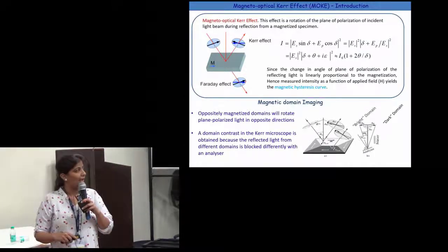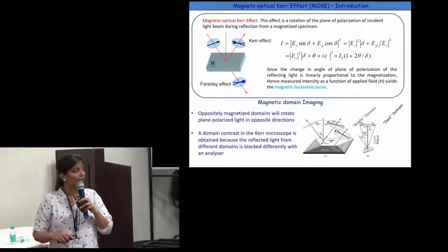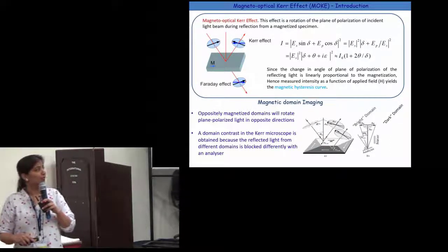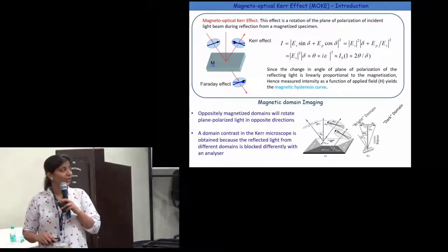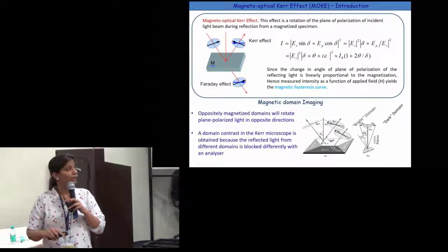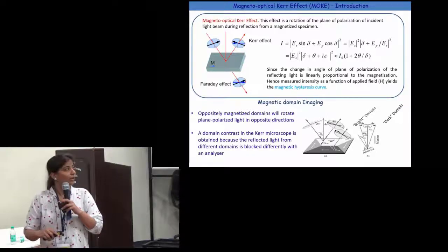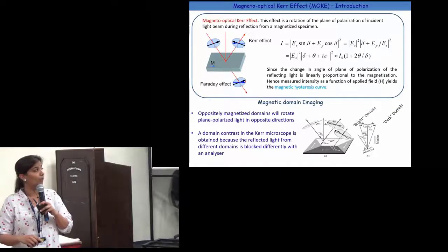The principle is: when linearly polarized light falls onto a magnetized sample, the sample has various domains oriented in different directions. Oppositely magnetized domains rotate the plane of polarized light in different directions. If we place the analyzer and polarizer such that they completely block light from one domain and completely allow light from another domain, we can see a black-and-white dark contrast — that is how we observe magnetic domains.